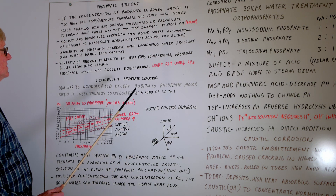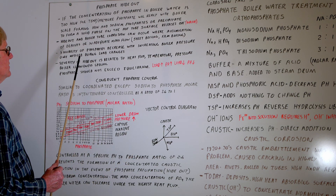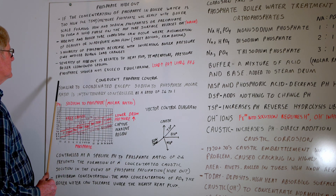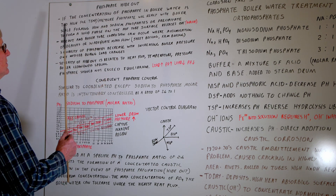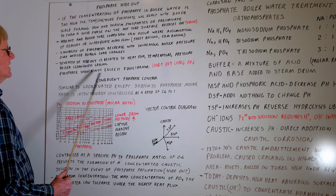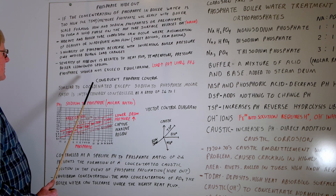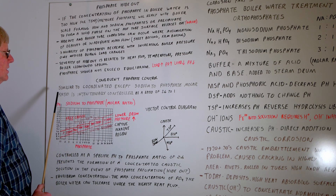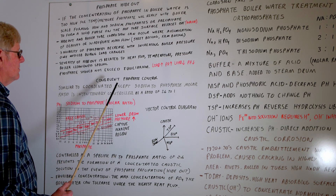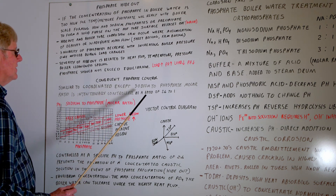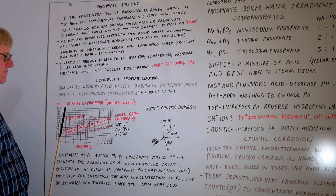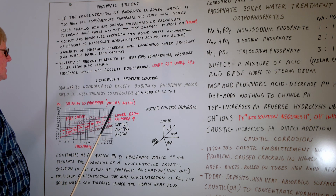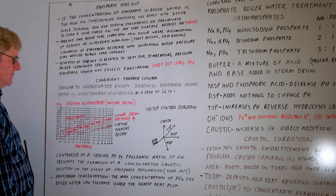This is a very basic overview of phosphate hideout. If anyone uses phosphate in boilers that change load frequently, you're going to experience phosphate hideout. Usually it's not a problem on clean boilers if you control it adequately. But if you don't, it can create problems of tube failures and other issues in the boiler over time.